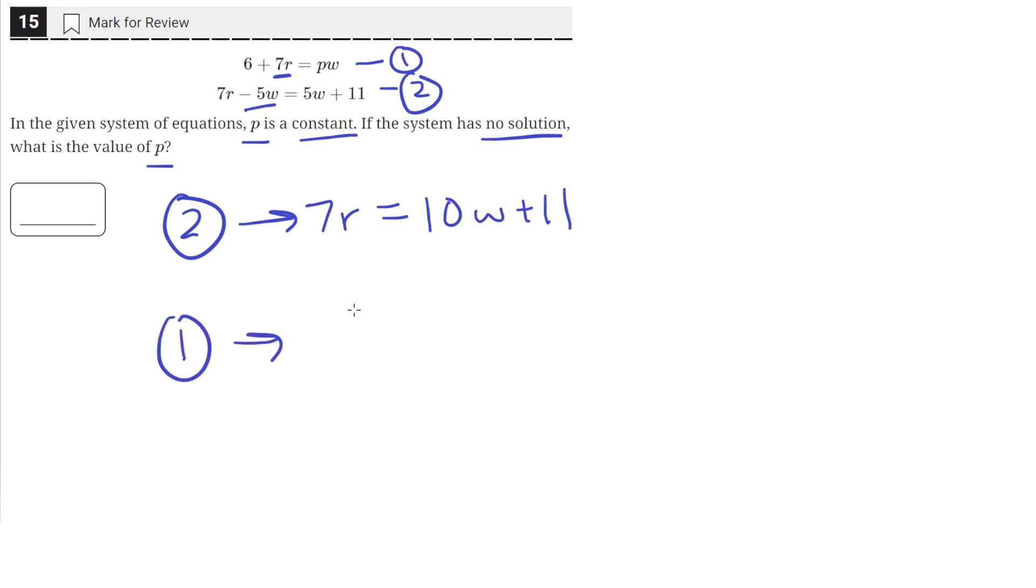So in equation one, six plus 7r, which is equal to this. So six plus 10w plus 11 is equal to pw.